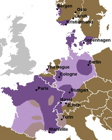Features of the uvular trill: Its manner of articulation is trill, which means it is produced by directing air over an articulator so that it vibrates. Unlike in tongue-tip trills, it is the uvula, not the tongue, that vibrates.